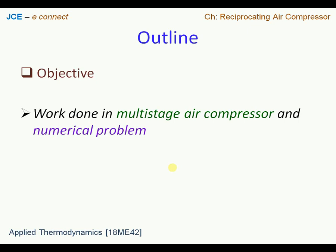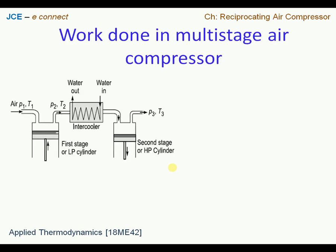To begin with, we'll consider a two-stage reciprocating air compressor. It has two cylinders. The first cylinder is called the first stage or low pressure cylinder. The second piston-cylinder assembly is called the second stage or high pressure cylinder. In between these two stages we have an intercooler — a component which works on the principle of a heat exchanger.